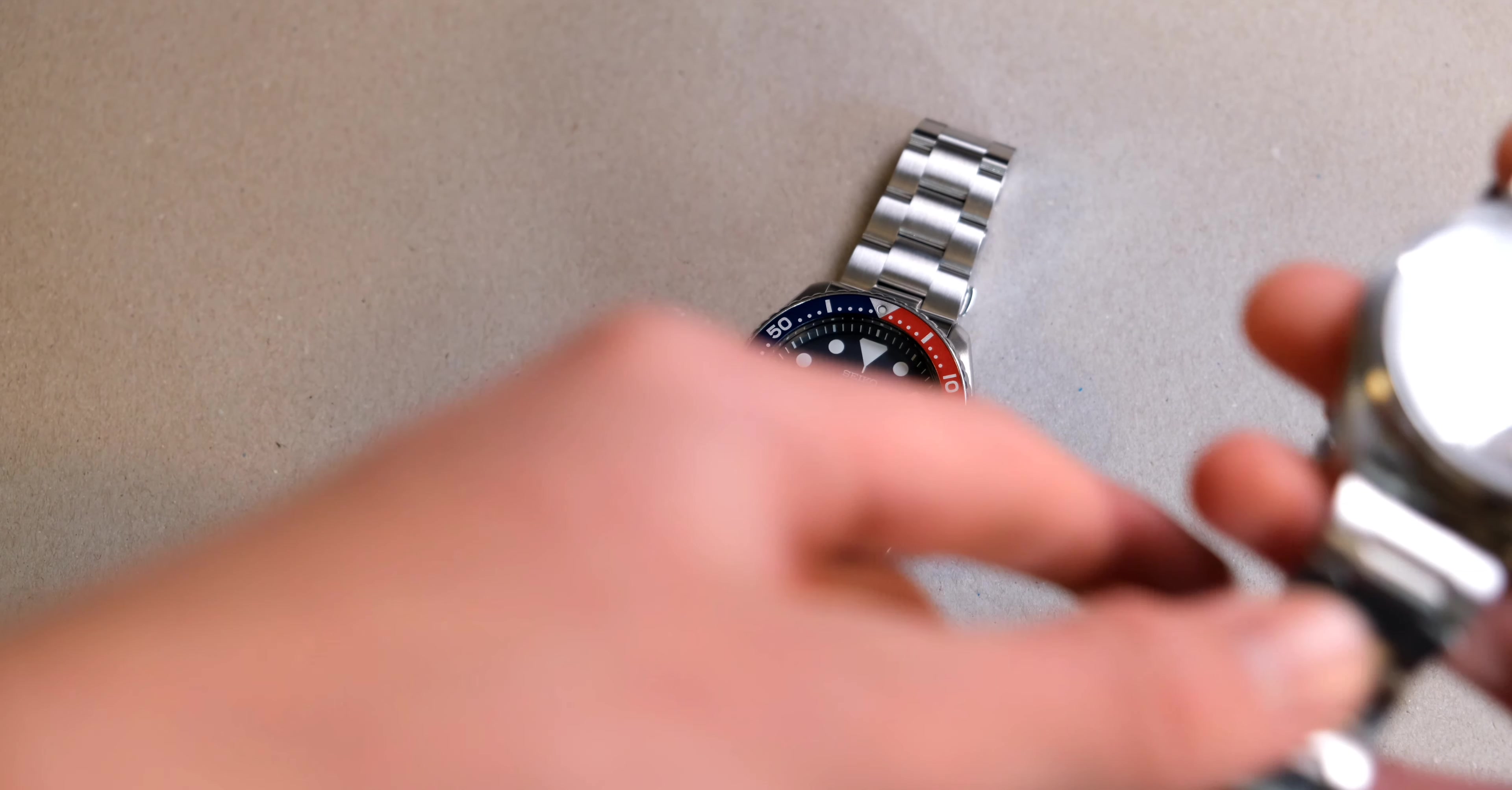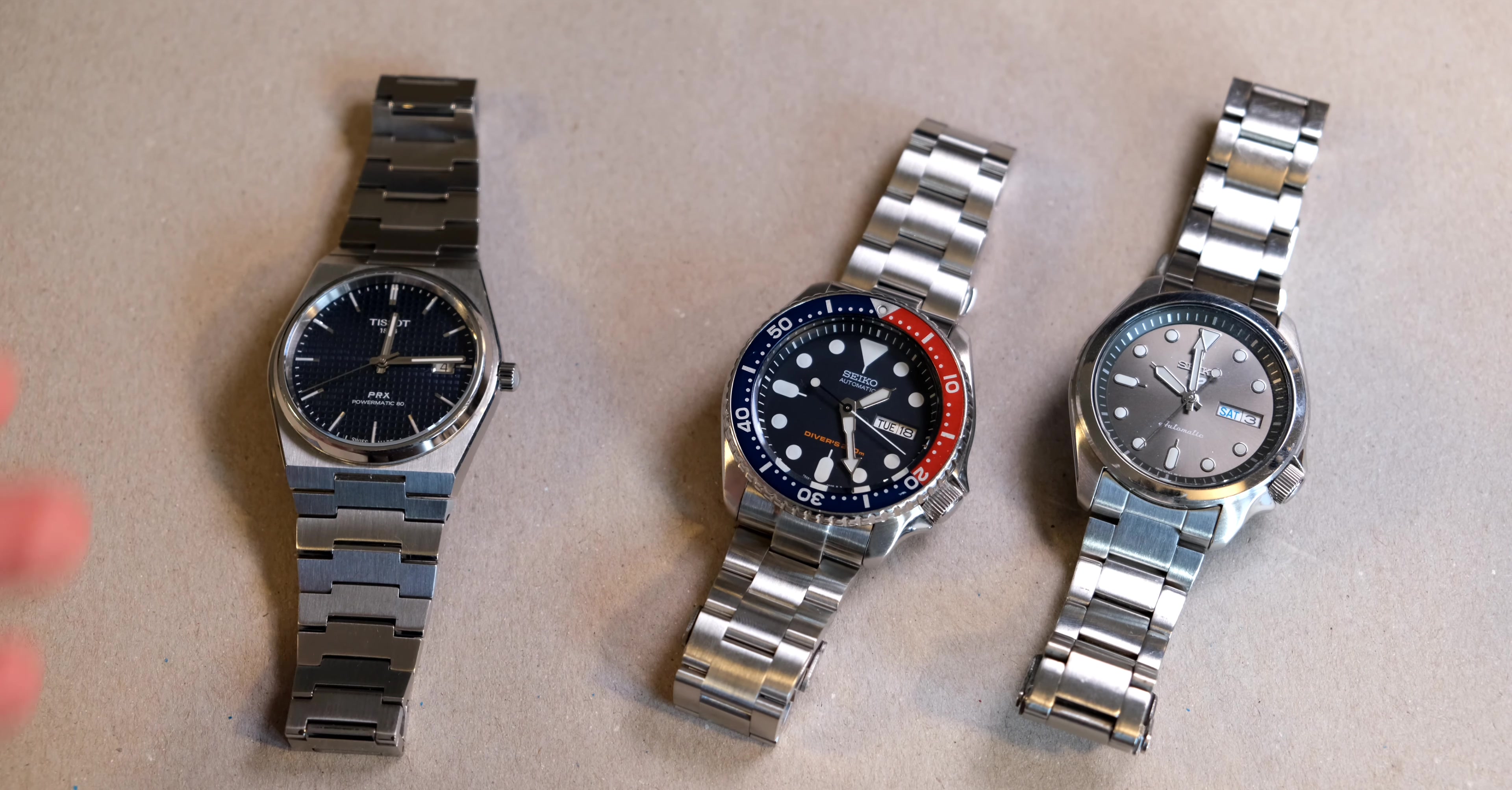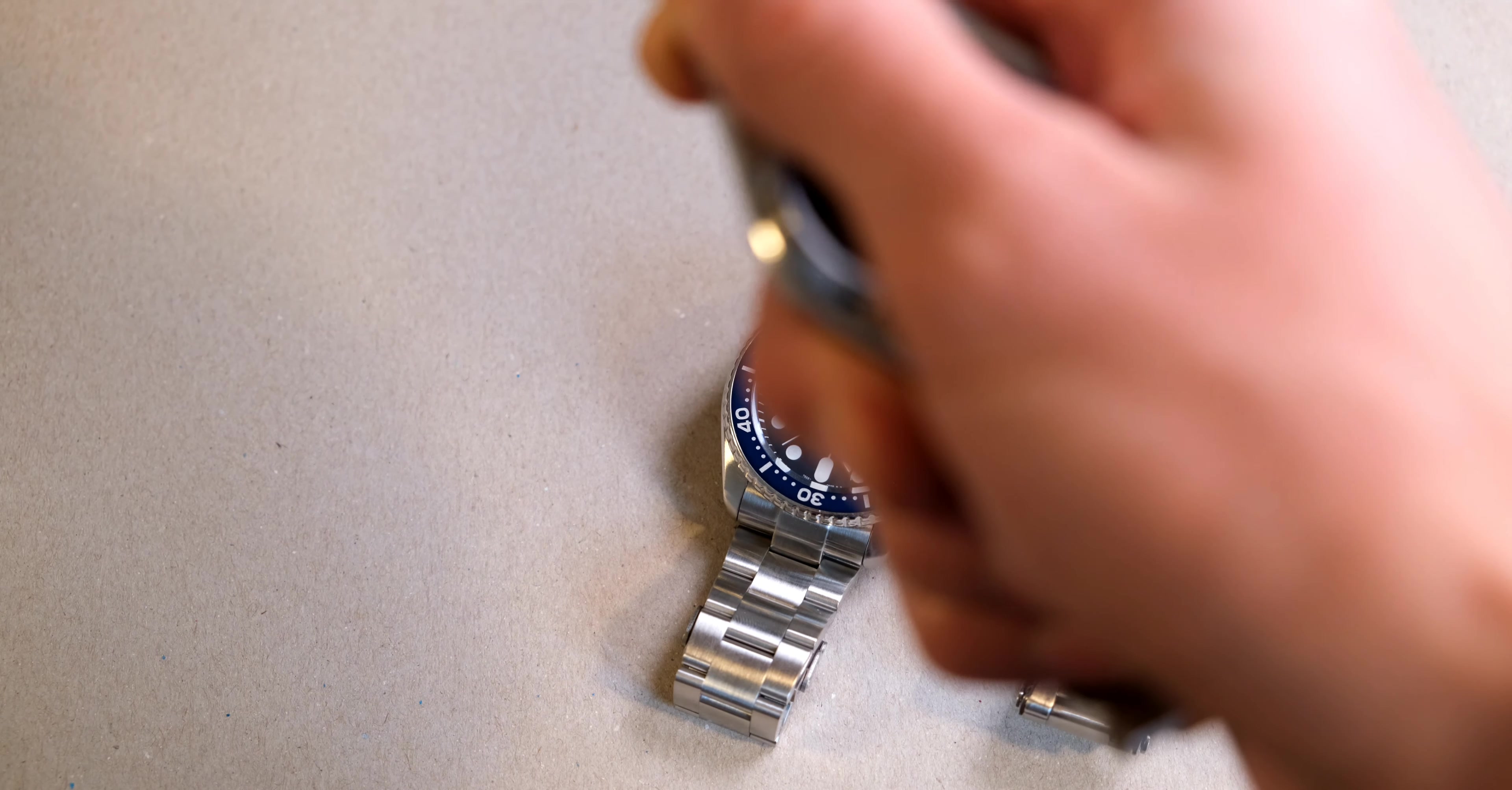So later on my brother got the Seiko 5, and it makes the exact same noise. And I have also got this Tissot PRX, and I thought it would be high-end Swiss, not high-end, but I thought this would be completely quiet. But well, it isn't as loud as with the Seikos, but you can still hear it. But you don't feel it as much in your hand, but you can hear it.